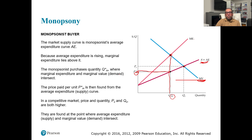In a competitive market, price and quantity are PC and QC. The monopsonist is buying less than in the competitive market. The competitive equilibrium is found where the average expenditure (supply) curve and the marginal value (demand) curve intersect, so the monopsonist buys less than the competitive outcome.